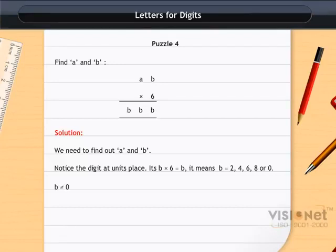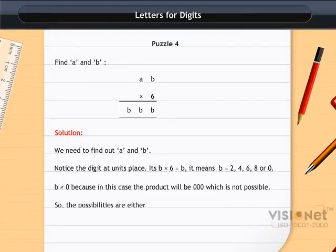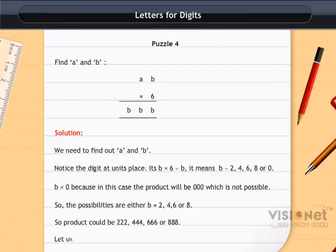b is not equal to 0 because in this case the product will be 0 which is not possible. So the possibilities are either b=2, 4, 6, or 8. So product could be 222, 444, 666, or 888. Let us divide these numbers by 6 one by one.